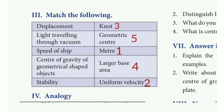Match the following. First: Displacement — the answer is meter. Second: Light traveling through a vacuum — the answer is uniform velocity. Third: Speed of ship — the answer is knot. Fourth: Center of gravity of a geometrical shape object — the answer is large base area. Fifth: Stability — the answer is geometrical center.